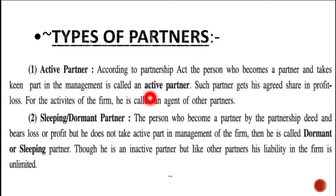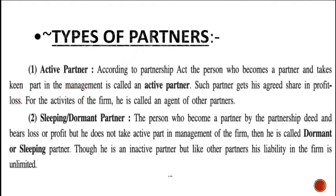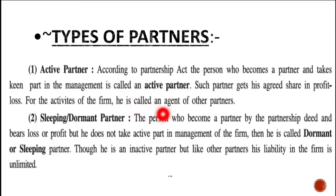According to the Partnership Act, the person who becomes a partner and takes keen part in the management of the partnership firm — and that partner is also actively taking part in the management process — such kind of partner is known as an active partner. Such a partner gets his agreed share in profit and loss, and he is also called an agent of the other partners.